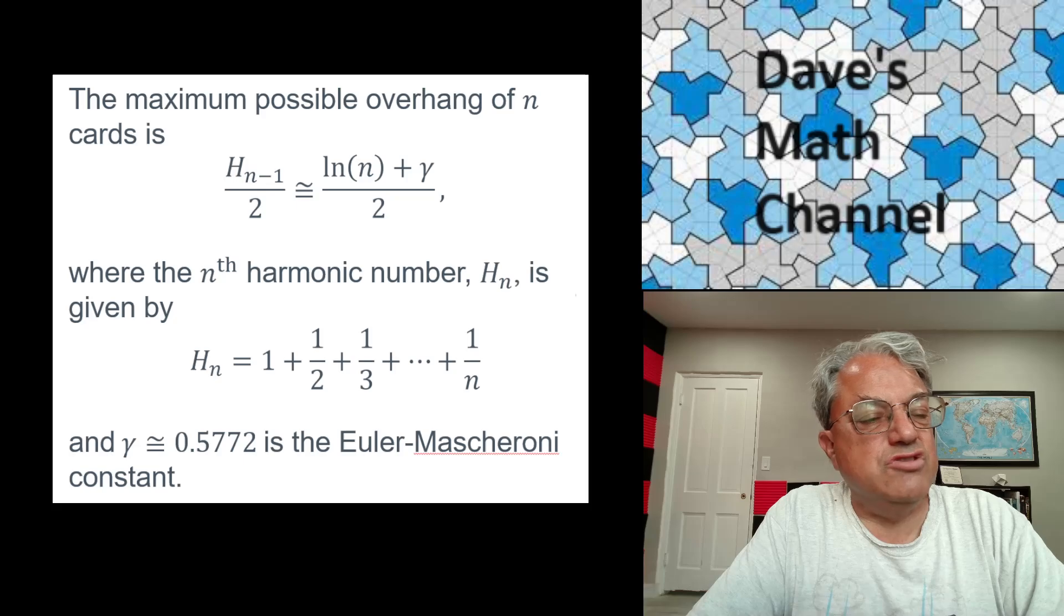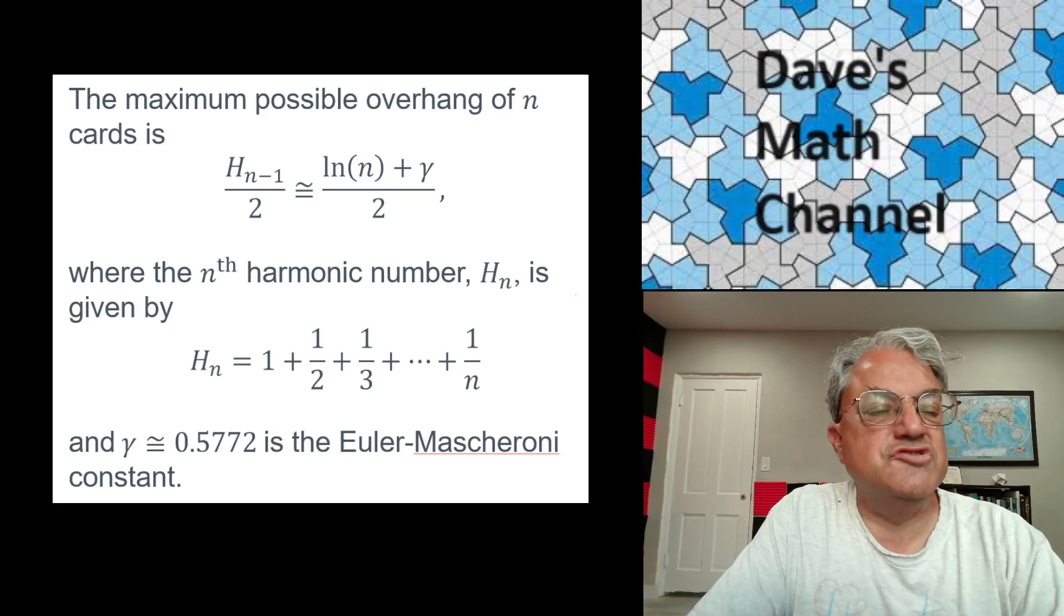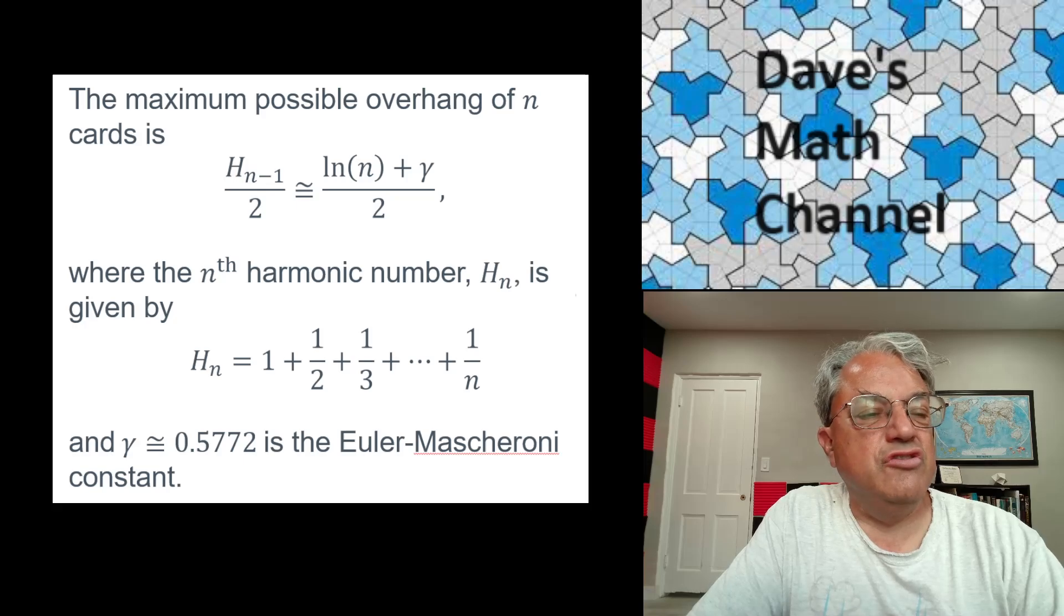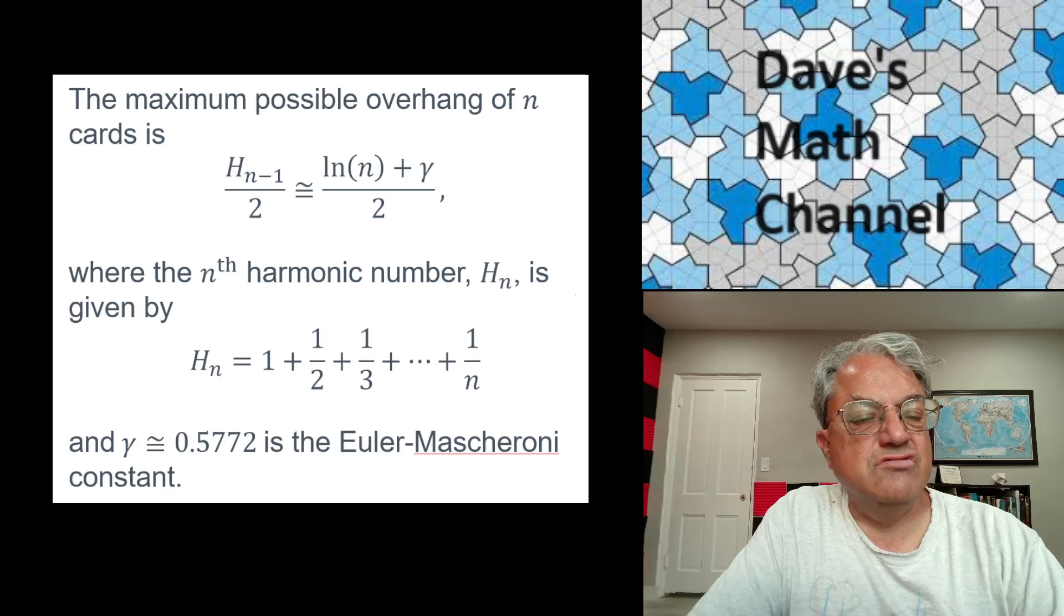And there's an asymptotic formula. So h_n, I have a formula for down here. It's just the sum of the reciprocals of all the numbers up to n, like I said. And there's an asymptotic formula for it. It turns out that h_n is approximately equal to the natural logarithm of n plus this constant called gamma, which is the Euler-Masceroni constant, or approximately 0.5772. So that's the formula we can use. Or we could just calculate it exactly if n's not too large.